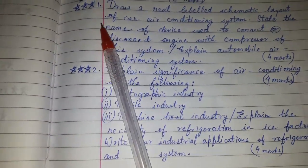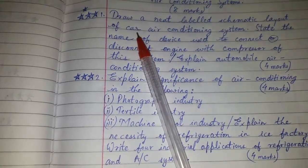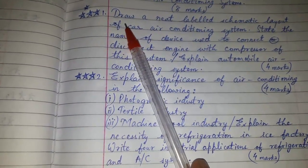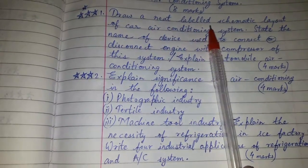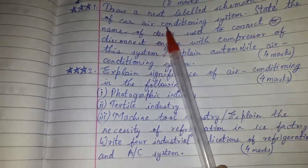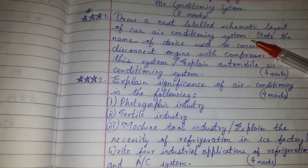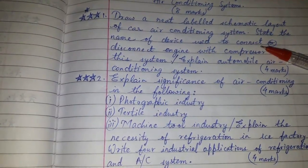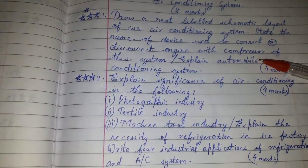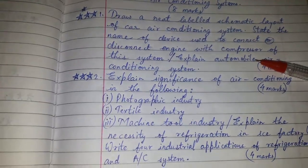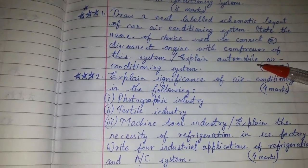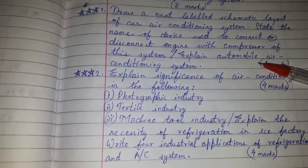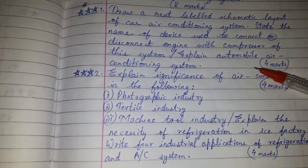The questions which have been asked are repeated several times. The more likely question types are: draw a neat labelled schematic layout of a car air conditioning system, state the name of the devices used to connect or disconnect the engine with the compressor of this system, or explain the automobile air conditioning system. This question can come for four marks.